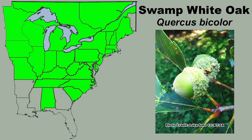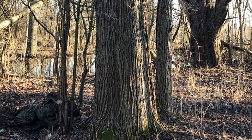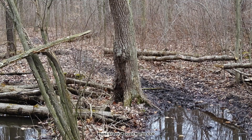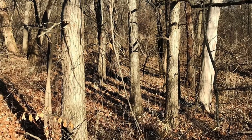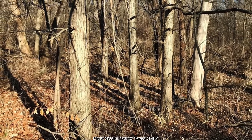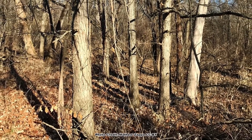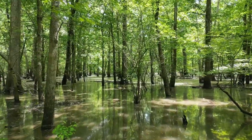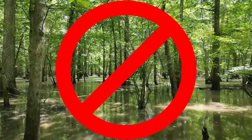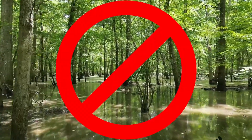Swamp white oak has a range that is mainly in the upper two-thirds of the eastern United States, where it can be found growing in lowlands, swamps, and moist slopes with mucky or peaty organic soils. It can handle wet soil but cannot handle continuous flooding.